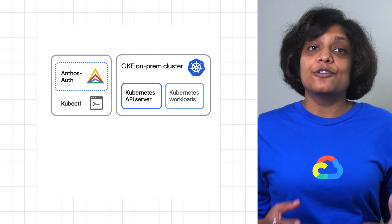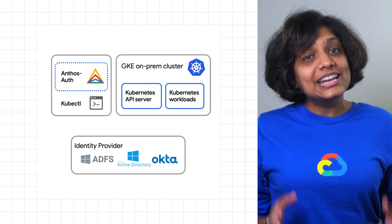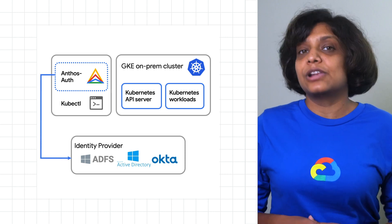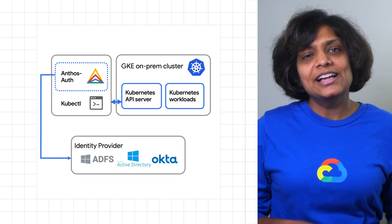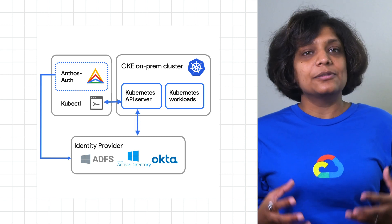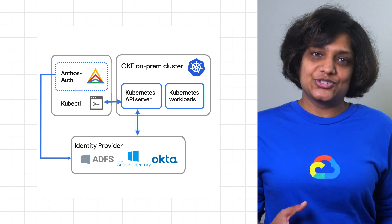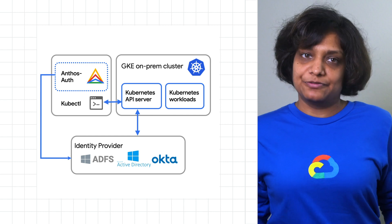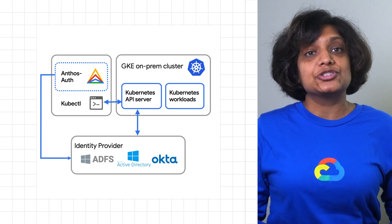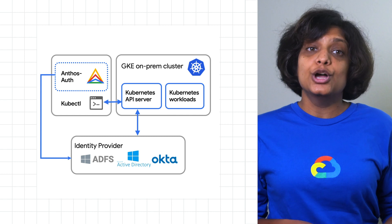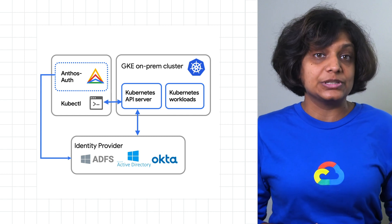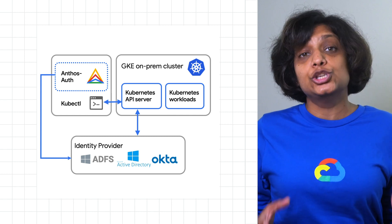Anthos On-Prem offers OIDC support, which enables authentication via gcloud or through Cloud Console. Say you are a platform administrator managing a small team of developers, and you're interested in providing access to the Kubernetes API server to debug issues or perform cluster management tasks using kubectl.